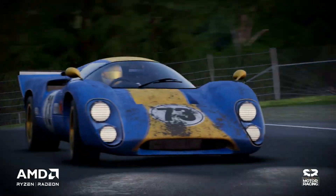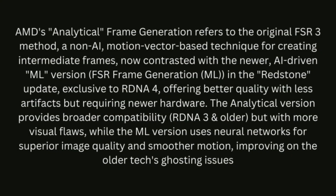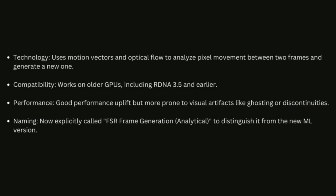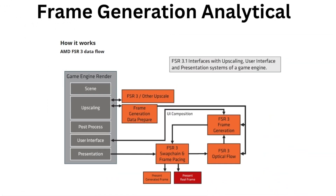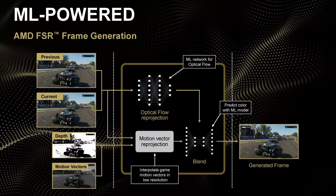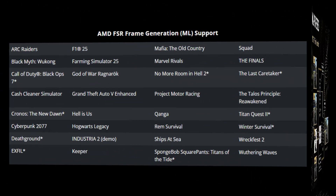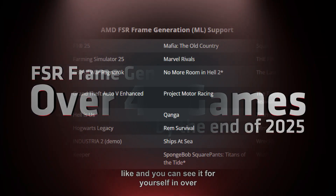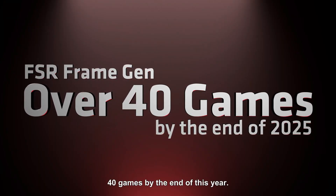As PC Gamer observes, to differentiate between the old non-AI frame generation and the new AI-powered Redstone version, AMD has two names: FSR frame generation analytical, and FSR frame generation ML — the latter being the AI take which uses machine learning. Messy? Yes, it's hardly very friendly for less tech-savvy consumers. AMD's FSR frame generation ML is already supported by around 30 games, and that'll be up to 40 titles by the end of this year, AMD tells us.